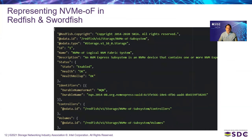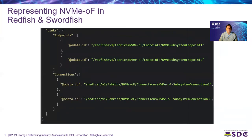This is the representation of an NVMe over Fabrics subsystem. You can see the name of the system, its status — this is an enabled, healthy NVMe over Fabrics subsystem — the identifiers that uniquely identify this subsystem for remote hosts to access, the controllers created for this subsystem, and the volumes this NVMe over Fabrics subsystem has been provisioned with. In addition, you have the endpoints that have been configured for this subsystem and the connections for how this subsystem can be accessed.